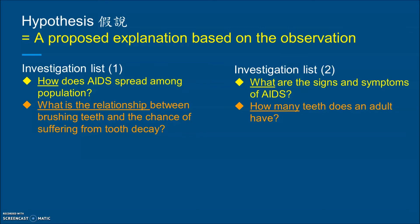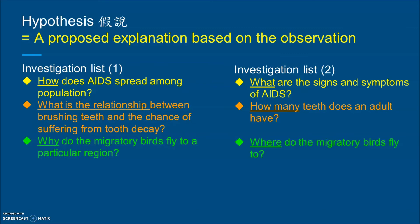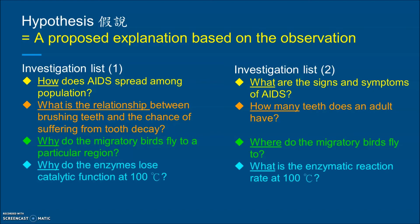The third pair: on the left, why do migratory birds fly to a particular region — why do they fly to Hong Kong, or to the North Pole? On the right hand side: where do they fly to — Hong Kong, Singapore, or Thailand? The focus is 'where'.